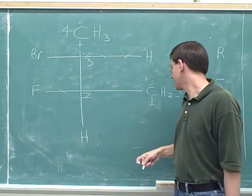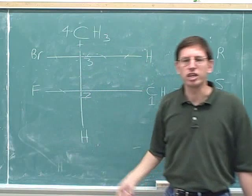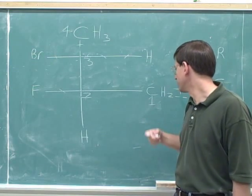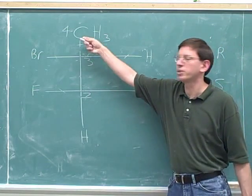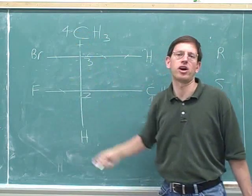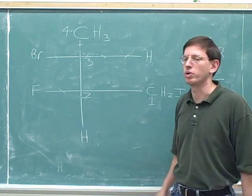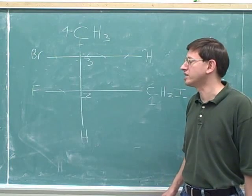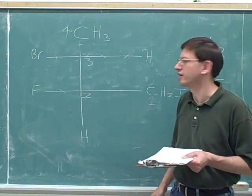We should start numbering so that we get a substituent on the number 1 carbon rather than waiting until number 2, giving substituents the lowest possible numbers. Remember that these chain-numbering numbers have nothing to do with the priority numbers for R and S — they are a completely different set of numbers used for naming the longest parent chain. You should definitely erase all the priority numbers before you start numbering the parent chain so you don't get confused.